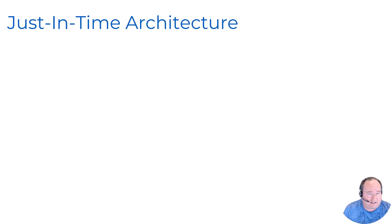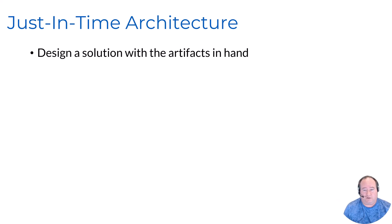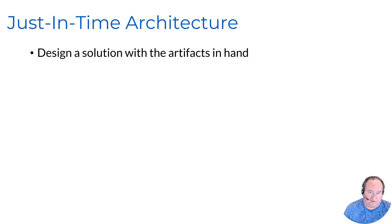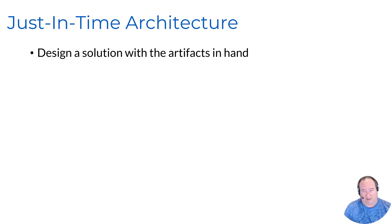Something else — not something we really had to focus on as on-premise BizTalk developers — is what I like to think of as just-in-time architecture. This means I'm going to design a solution as best I can with the artifacts available today: Logic Apps, Service Bus, API Management, and so on. Some of those components, like API Management, we didn't have access to five years ago, at least not in Azure. So I'm going to architect my solution just in time using the components available today.